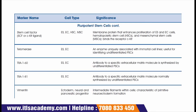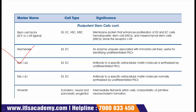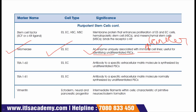The next marker is stem cell factor, or SCF/CK ligand. These are present on embryonic stem cells, embryonic carcinoma cells, hematopoietic stem cells, and mesenchymal stem cells. SCF is a membrane protein that enhances proliferation of embryonic stem cells, embryonic carcinoma cells, hematopoietic stem cells, and mesenchymal stem cells, and it binds with the receptor CK. The next marker is telomerase, present on embryonic stem and carcinoma cells. Telomerase is an enzyme uniquely associated with immortal cell lines, which are cancer-causing cells, and is useful for identifying undifferentiated pluripotent stem cells.